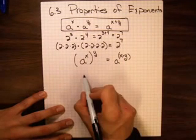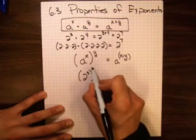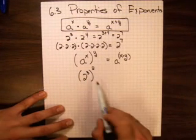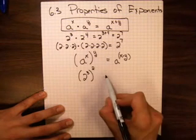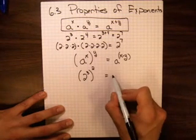As an example, let me take 2 cubed again, and I will raise this to the second power. So our property here says that this should equal 2 to the 3 times 2, multiply these two, 2 to the power of 6.